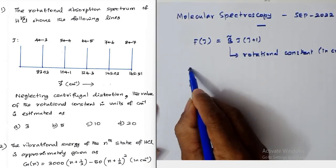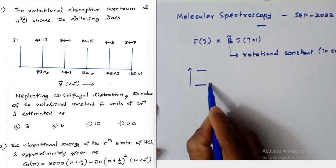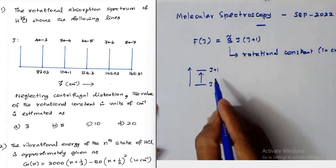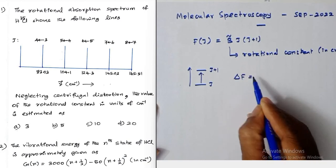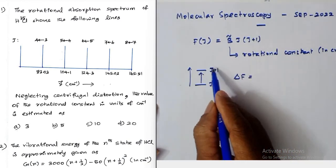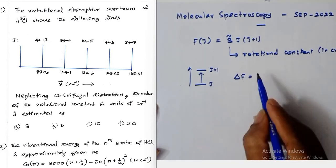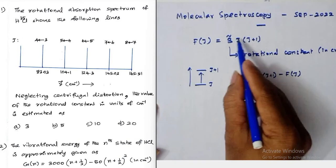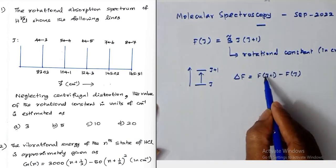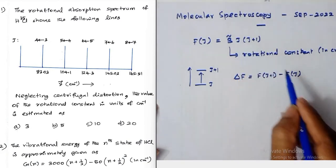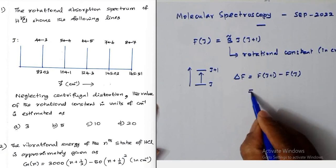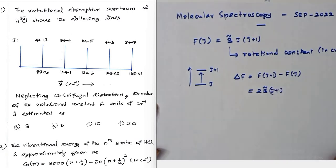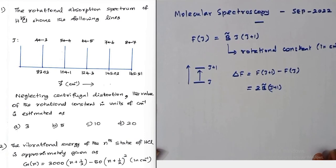If a transition takes place from the Jth level to the next J+1 level — a transition between adjacent levels — the energy required is F(J+1) minus F(J). If you subtract these, you get the final answer: 2B(J+1). So 2B(J+1) is the energy required for the transition.